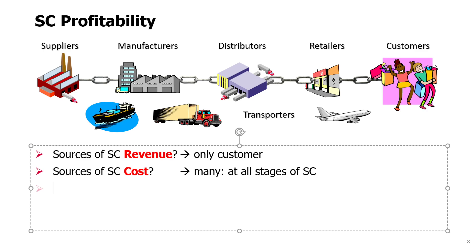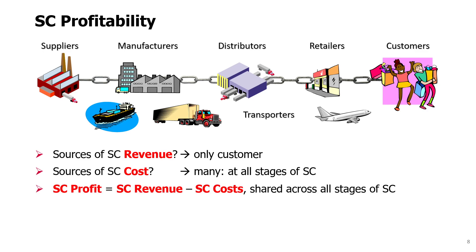All stages in the supply chain will have their own costs. Similarly to how we define profit for a single company as the difference between its revenues and its costs, supply chain profit can be defined as supply chain revenue minus supply chain costs. And this profit is shared across all stages of the supply chain.